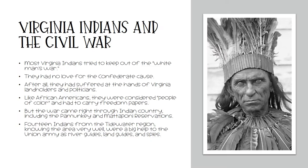Another group we need to consider are the Virginia Indians. Most Virginia Indians tried to keep out of what they called the White Man's War. They had no love for the Confederates' cause — after all, they had suffered at the hands of Virginia landholders and politicians. Like African Americans, they were considered people of color and had to carry freedom papers. But the war came right through Indian country, including the Pamunkey and Mattaponi reservations. Fourteen Indians from the Tidewater regions, knowing the area very well, were a big help to the Union Army as river guides, land guides, and spies.